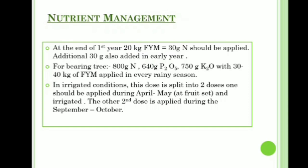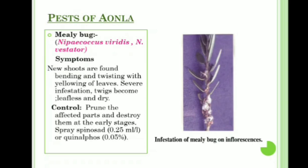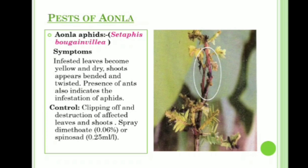Pests of Amla — first is mealy bug (Nipaecoccus viridis and Nipaecoccus vastator). Symptoms: new shoots are found bending and twisting with yellowing of leaves; severe infestation causes twigs to become leafless and dry. Control: prune the affected parts and destroy them at early stages, then spray Spinosad 0.25 ml per liter and Chlorpyrifos 0.05 percent.